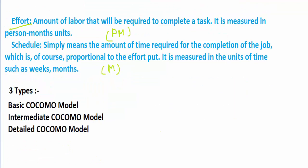There are three types of COCOMO. The first type is the Basic COCOMO model, the next one is Intermediate COCOMO, and the final third one is Detailed COCOMO.